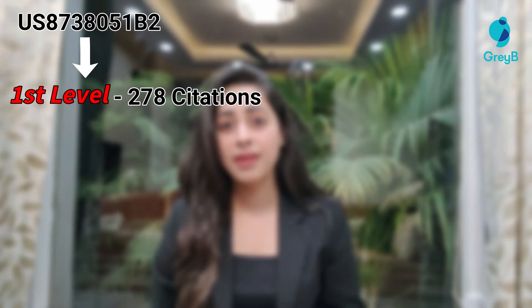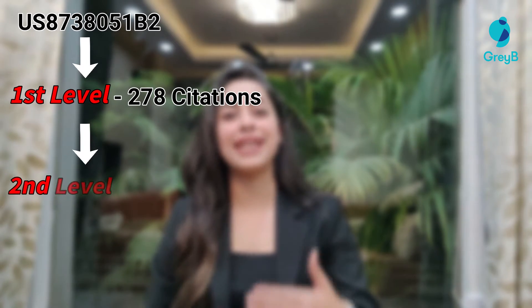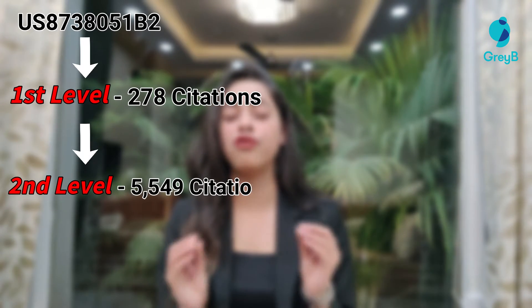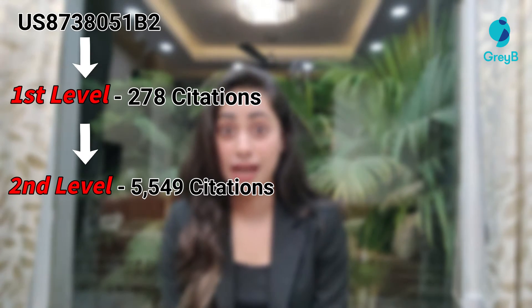For example, if you need to check the backward citations of the US051 patent, here are the steps you'd normally follow. You'd first check the citations of the first level of patents, which are 278. Then you'd check the second-level citations, which rise to 5549. Just try to absorb the fact that the actual process hasn't even started yet and you are already stuck in a pool of patents.